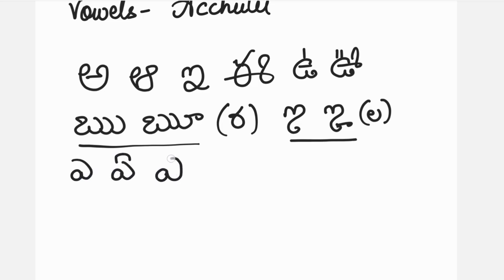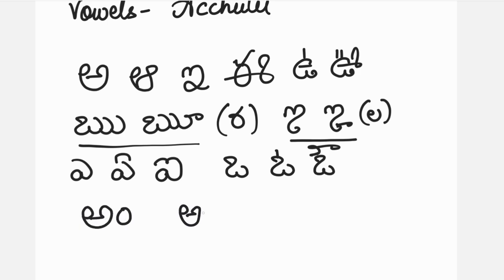These are the vowels: A, aa, I, ee, U, oo, aru, aru, alu, alu, eh, eh, ai, O, o, au, am, aha.